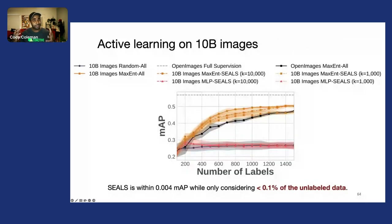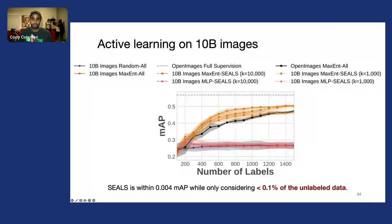To really put this at scale, we created a dataset of 10 billion images from a social media platform at a large internet company. We applied SEALS and found that it achieves a very similar mean average precision to the baseline approach that scans over all of the data.